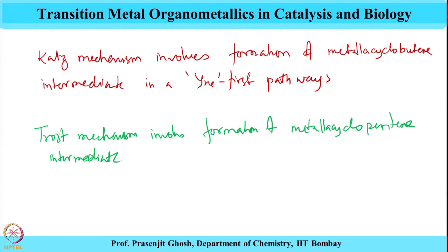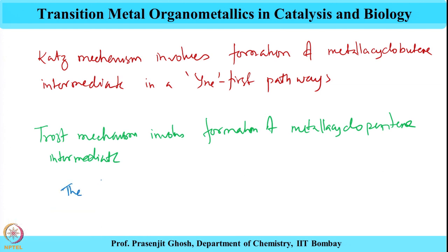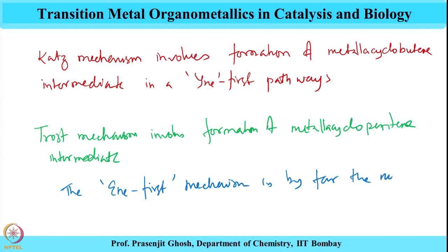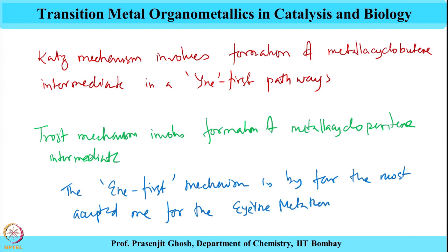Katz's mechanism involves formation of a metallocyclopentene intermediate; however, the alkene-first mechanism is by far the most accepted one for the enyne metathesis reactions.